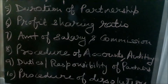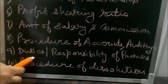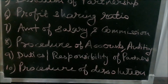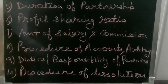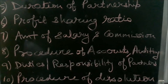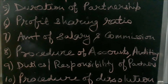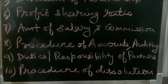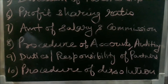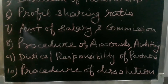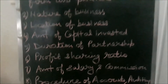Auditing means checking of accounts — whether accounts are prepared properly or not. Ninth is the duties and responsibilities of the partners, meaning the type of liability: whether partners have limited or unlimited liability determines the extent of their duties and responsibilities. Tenth is the procedure of dissolution — how the firm will come to an end. The method of dissolution is also specified in the partnership deed. These are the important contents of the partnership deed, though the contents may vary from firm to firm depending on the nature and objective of the firm.